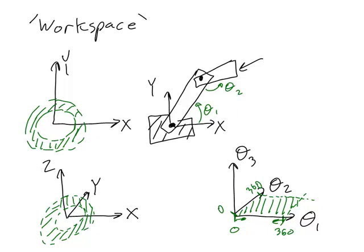And that complete intersection area is the workspace in configuration space. So we can see from these examples that finding workspace in configuration space is much easier than finding it in Cartesian space.